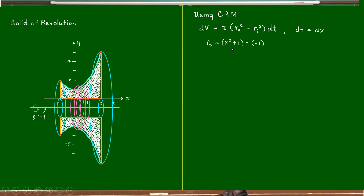Using the circular ring method, dV equals pi multiplied by the outer radius squared minus the inner radius squared, times dt. The outer radius is y higher minus y lower of the axis: x squared plus one minus negative one, simplifying to x squared plus two. The thickness dt is dx since the element is vertical. The inner radius is y higher (the x-axis, zero) minus y lower (negative one): zero minus negative one equals one. So the inner radius is fixed at one.